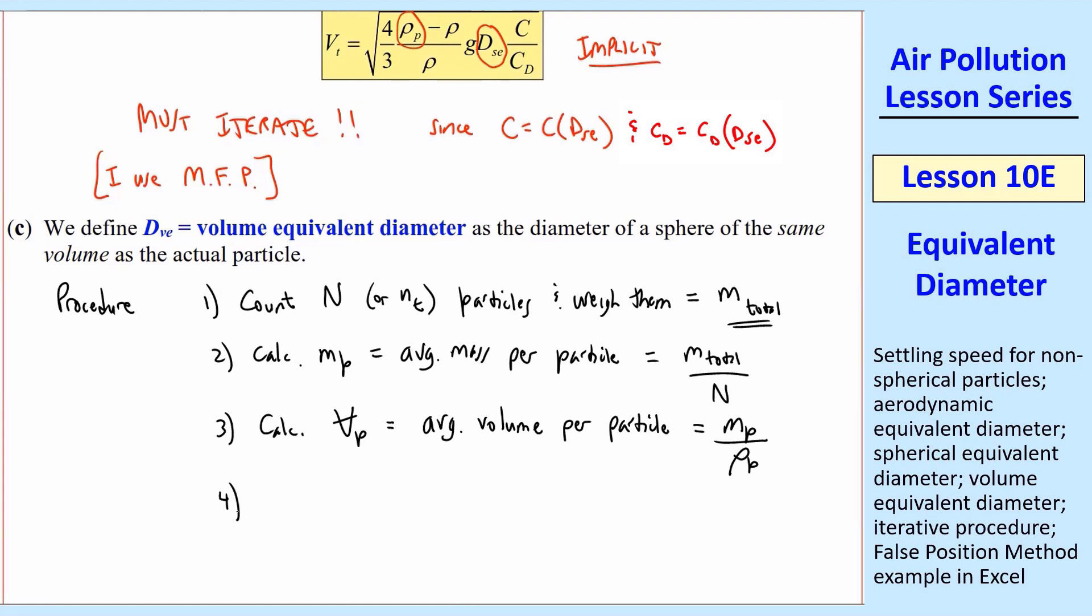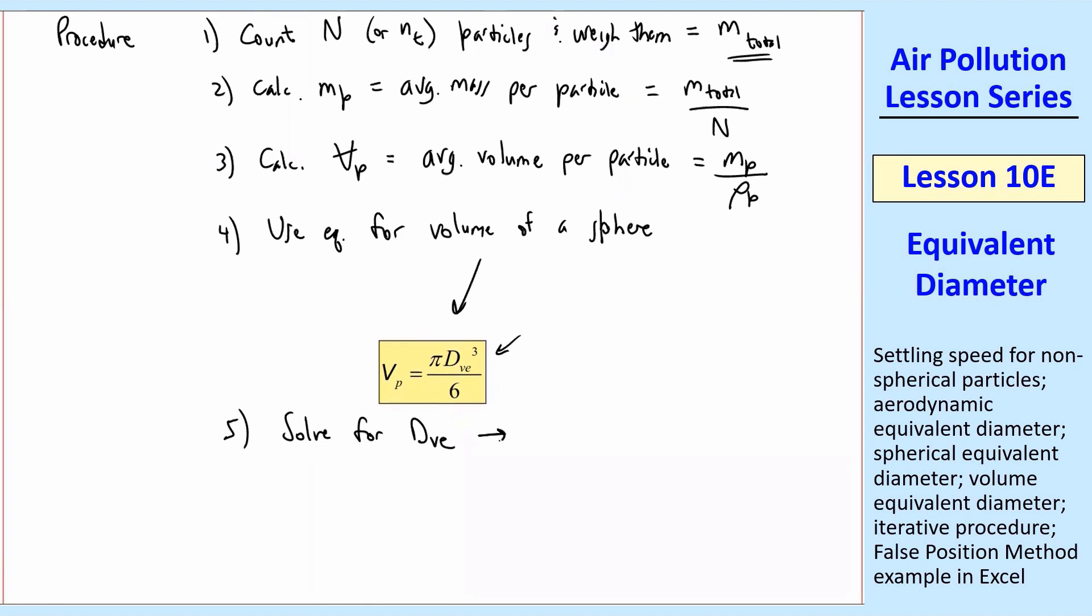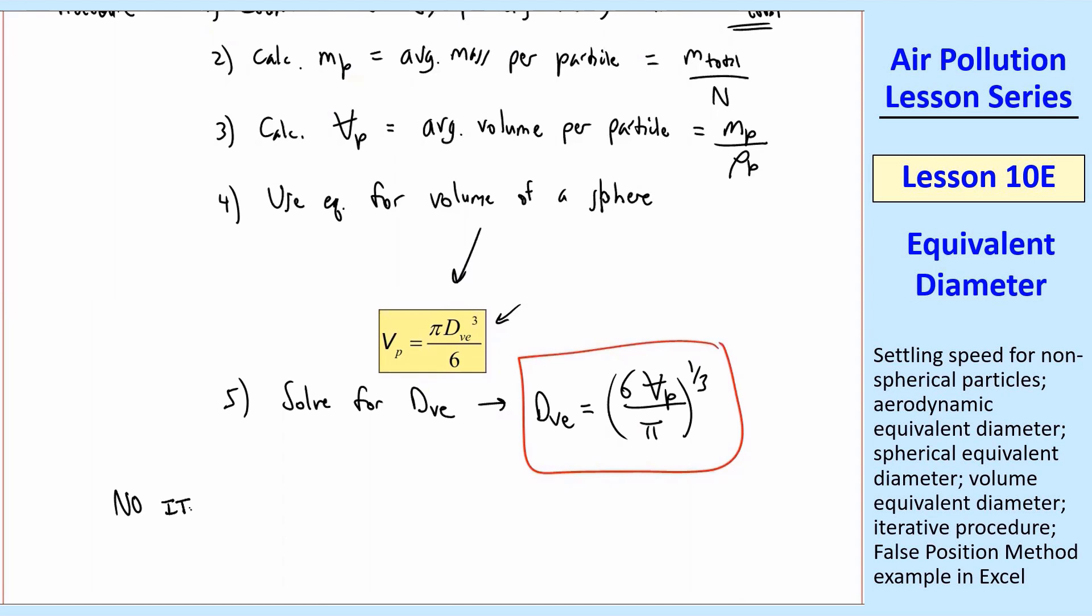For example, you can get a whole bunch of particles and immerse them in water and look at the displaced volume, assuming you don't have any air bubbles. And that can give you a volume of the particle in a different way. Now we use the equation for volume of a sphere, which I conveniently happen to have typed up here. So the volume of the particle is π dᵥₑ³ over 6. I'm using this volume equivalent diameter, dᵥₑ, as the diameter of my sphere, of course. And then we just solve for dᵥₑ. And this one's pretty trivial. You get dᵥₑ equals (6vₚ/π)^(1/3). And the nice thing about this equivalent diameter is there's no iteration required. This is an explicit equation, so that's the easiest one.